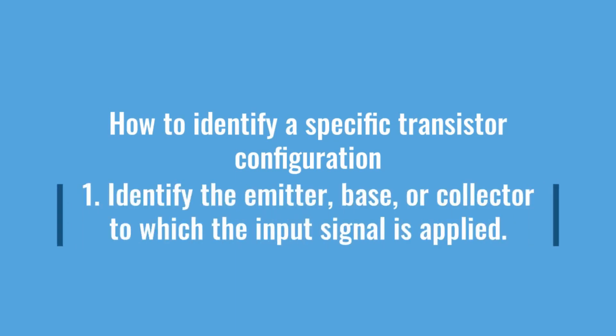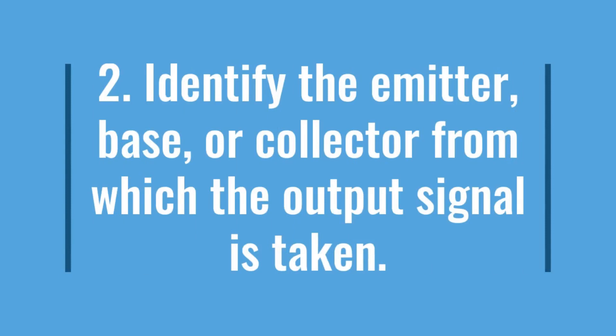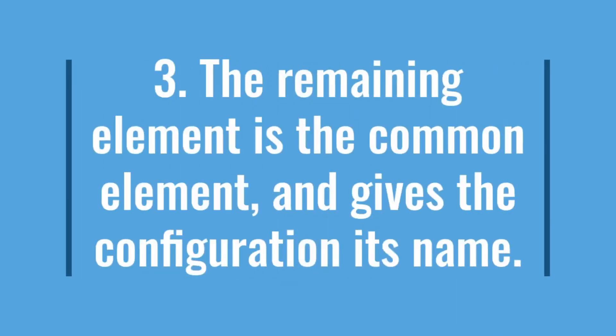An easy way to identify a specific transistor configuration is to follow three simple steps. 1. Identify the element, emitter, base, or collector, to which the input signal is applied. 2. Identify the element, emitter, base, or collector, from which the output signal is taken. 3. The remaining element is the common element and gives the configuration its name.